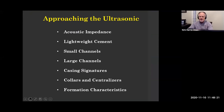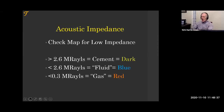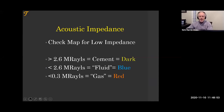Let's approach the ultrasonic for the next 20 minutes — this is how we approach it, what we look at, how it differs from the bond log. We'll look quickly at seven of these and what it looks like when we're interpreting. When I go to the log, I want to look for acoustic impedance. It is calculated — if it's greater than 2.6 mega Rayls, it's usually dark, indicating cement; less than 2.6 is liquid; less than 0.3 is red for gas.